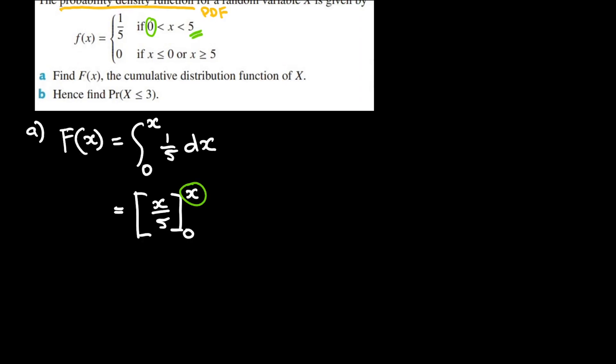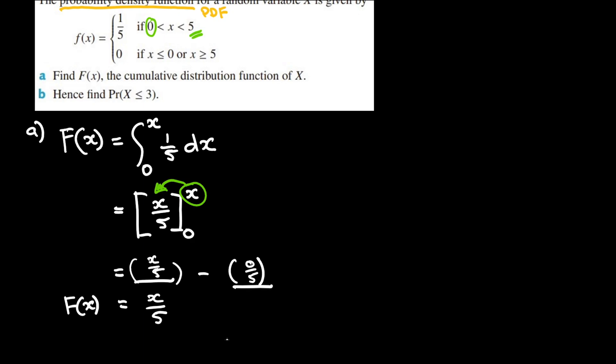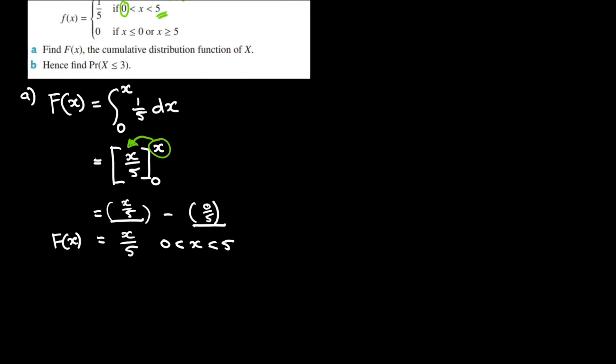For part A, we're evaluating the integral from zero up to x. The zero comes from the lower bound of our function. Instead of going up to five, we go up to x because we want to get a function, not a number — if we put five in there we'd get a number, but putting x in gives us a function minus a number. So our cumulative density function is a linear function: x over 5, between zero and five. It's worth writing this as a piecewise function.